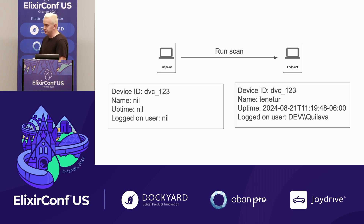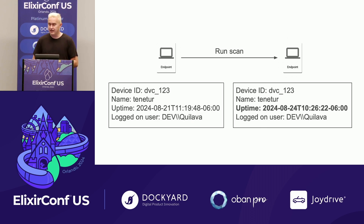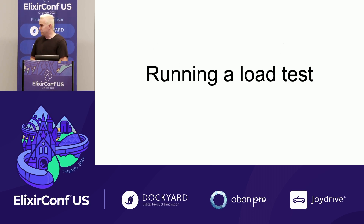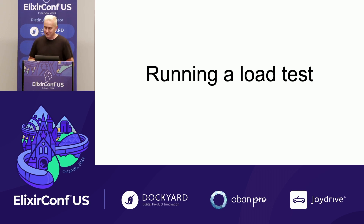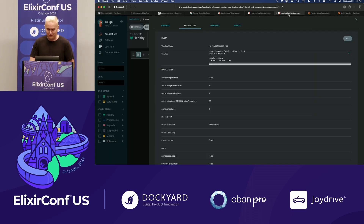To show this visually: on the left is a device that has not yet been scanned — a brand new device. If we tell it to run a scan, it returns results with its name, uptime, and logged-on user populated. If we then tell that device to scan again, we get the same results for fields we expect to stay constant, and uptime is changed. So let's actually try and run a load test — not the two million devices, that would take too long, but we'll try 100,000 and see how well it works.